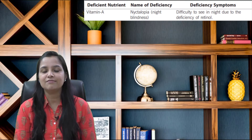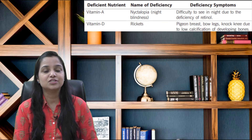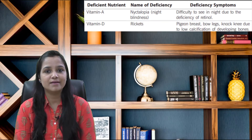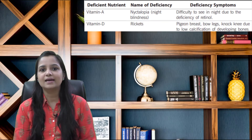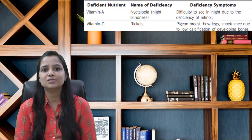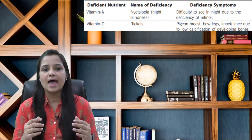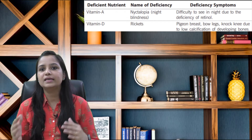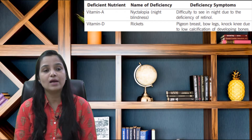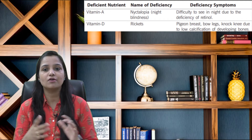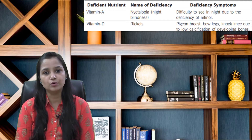The second vitamin is vitamin D. Its deficiency causes rickets, and its symptoms are pigeon breast, bow legs, and knock knee due to low calcification of developing bones.